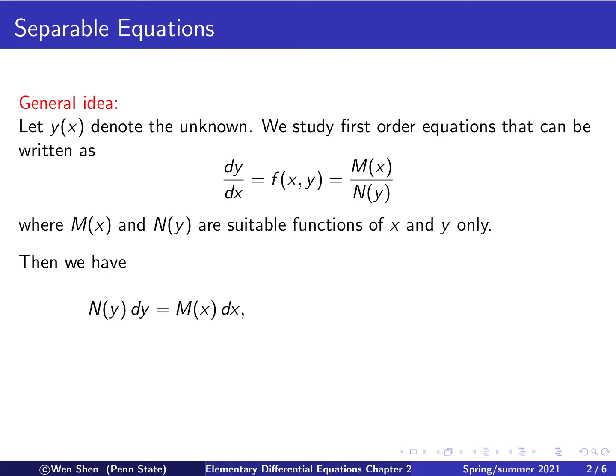For this type of equation, we can now do the following manipulation. We can move N(y) to the left-hand side to join dy, and then we move dx to the right-hand side to join M(x). Now we see that the left-hand side only depends on y, and the right-hand side only depends on x. So the variables are separated.